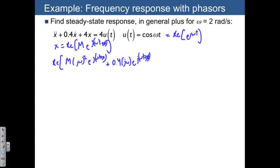And I think I'm missing a factor of m here, plus 4 times m e to the j omega t plus phi.